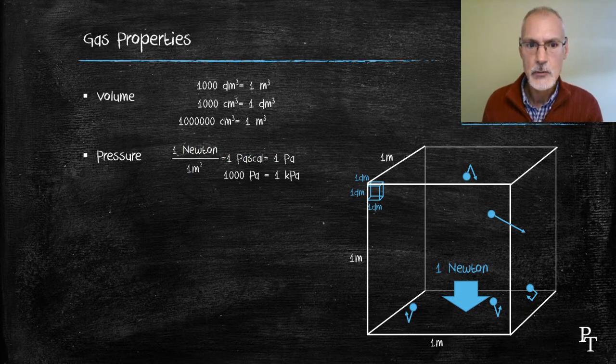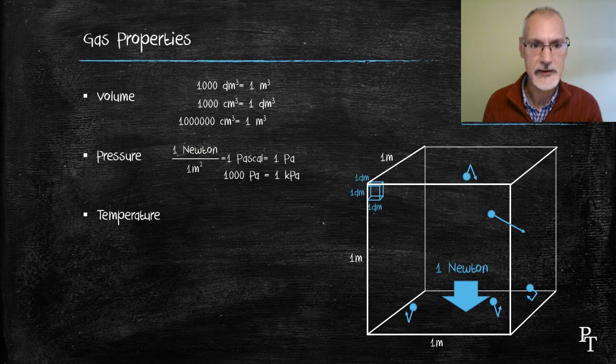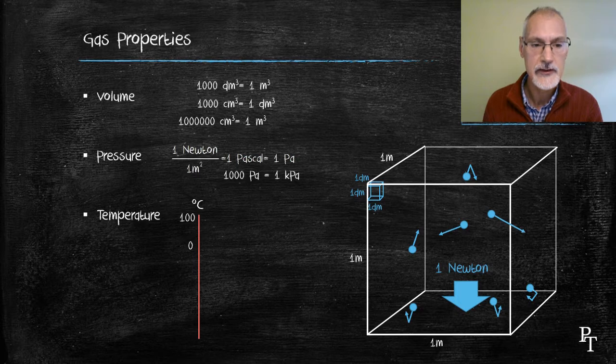Temperature. We're familiar perhaps with the Celsius scale. The Celsius scale is a measure of the average kinetic energy of our substance, starting at zero degrees Celsius and climbing to a hundred degrees Celsius.